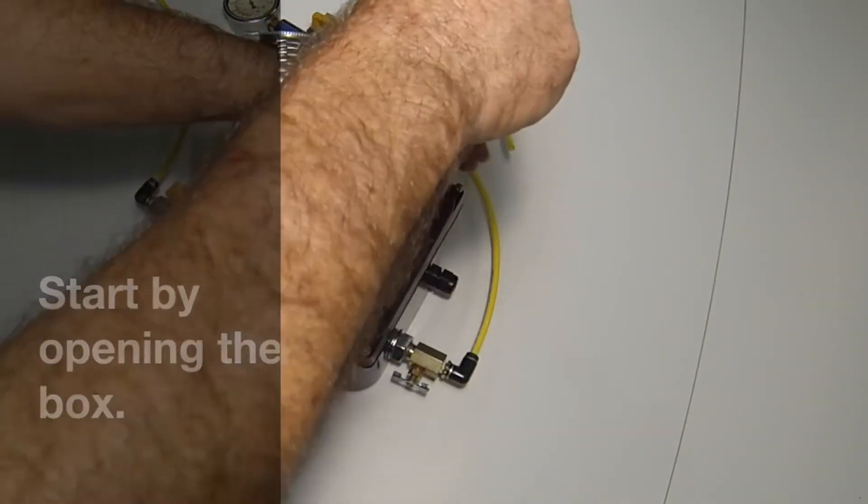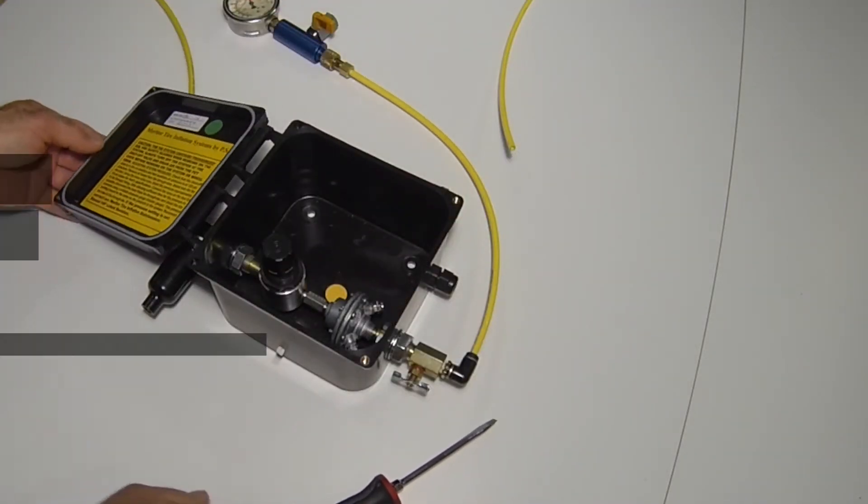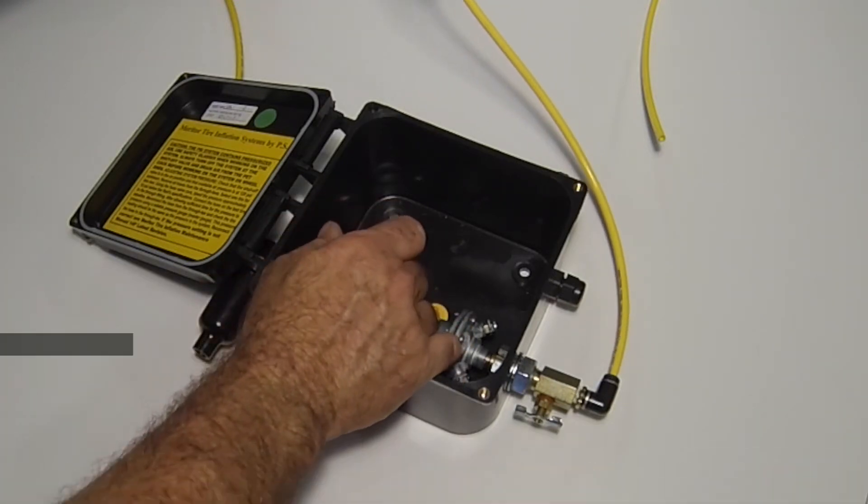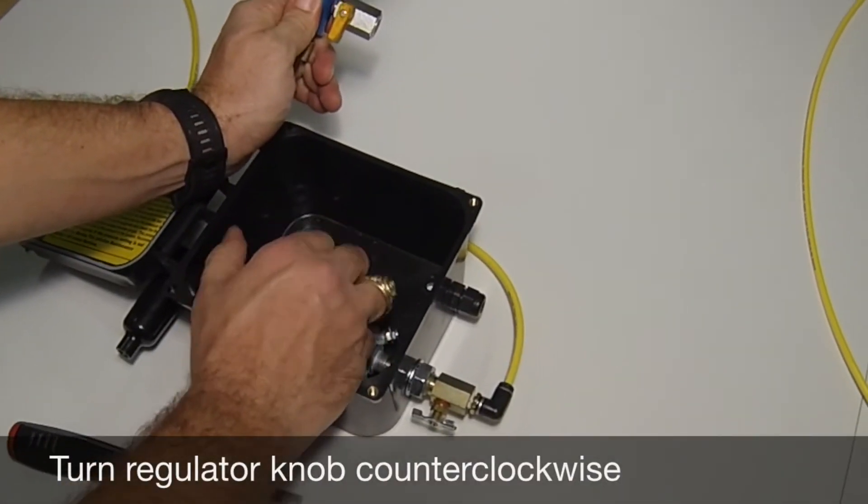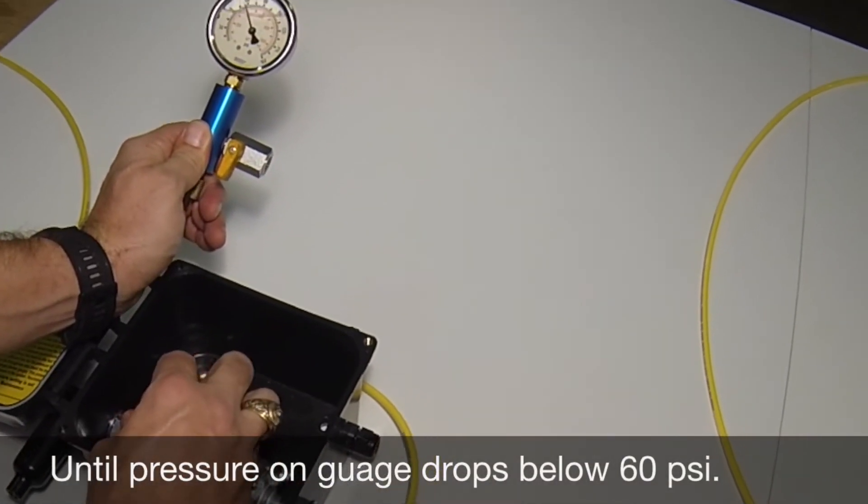The first step of the adjustment is opening the control box. Now unlock the regulator knob by pulling outwards until you feel a slight click. After the click, turn the regulator knob counterclockwise until the pressure on the gauge reads below 60 psi.